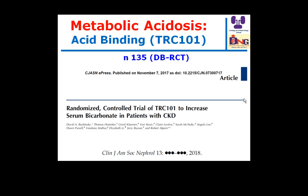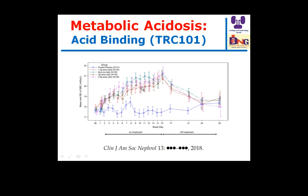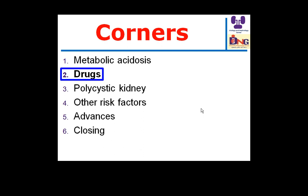This is the study of the new drug TRC-101, an acid-binding drug. It binds HCl, reducing hydrogen and increasing bicarbonate without exchanging with sodium. This is a beneficial advantage compared to sodium bicarbonate therapy, where increasing serum bicarbonate comes at the expense of increasing sodium load. In this study, with different concentrations of the drug, serum bicarbonate improves; when the drug is withdrawn, serum bicarbonate decreases. We are waiting further studies to show the value of this newcomer in managing metabolic acidosis and avoiding sodium overload induced by sodium bicarbonate.